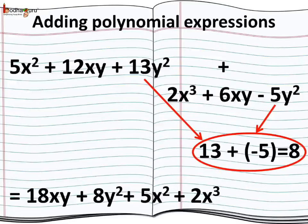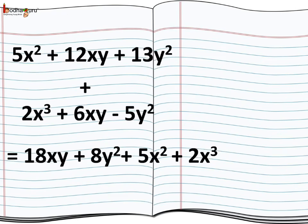And there is one more like term. 13y² would be added to minus 5y². 13 plus minus 5 is equal to 8. So we get 8y². Now there is no like term for 5x² and 2x³. So they wouldn't be added to any term and remain as is. So we'll write these in the answer without any changes, as plus 5x² and plus 2x³. Thus we get the answer as 18xy + 8y² + 5x² + 2x³.